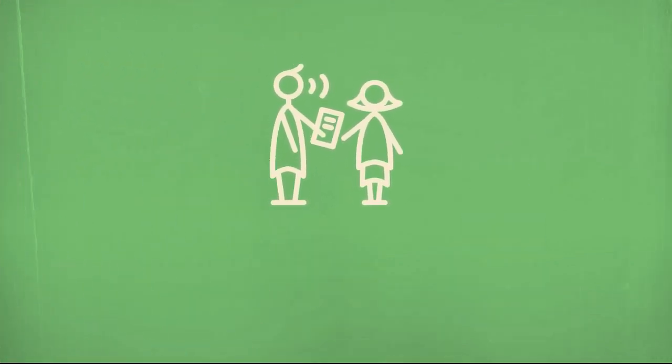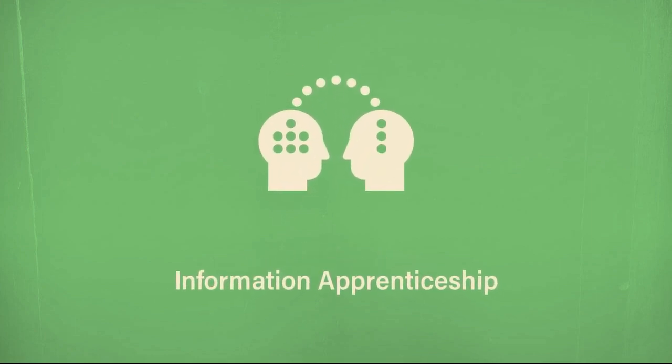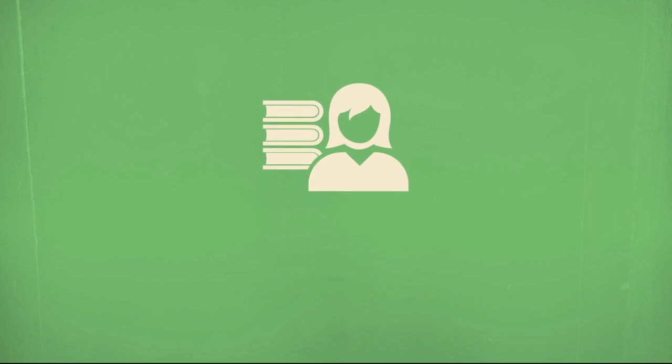The process by which an individual in an information community develops expertise is called information apprenticeship. Learners get help in this process from others with more expertise and from those with related expertise, such as librarians.